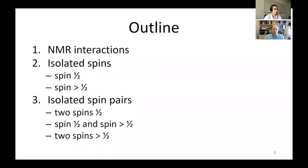Very briefly, I'll mention the NMR interactions we're dealing with — I'm going to be talking about diamagnetic molecules and focusing on crystalline materials. I want to cover two things: very simple isolated spins — spin one-half and quadrupolar spins — and isolated spin pairs, where we can have two spins one-half, two quadrupoles, or one of each. We'll see what affects the line shapes and how to properly simulate them.